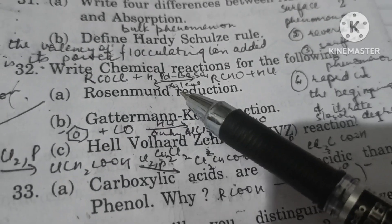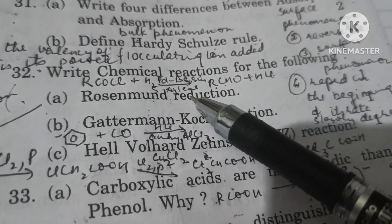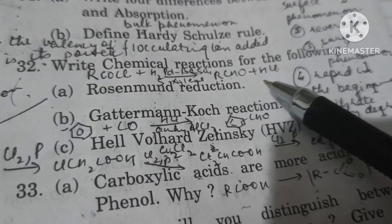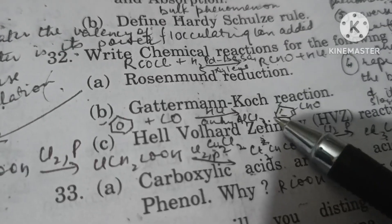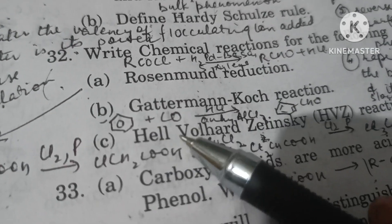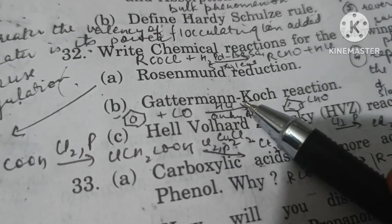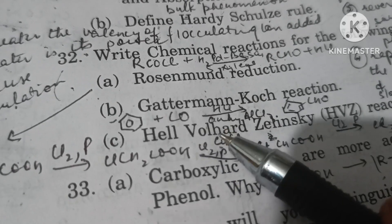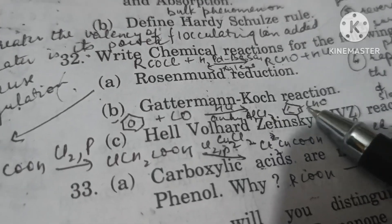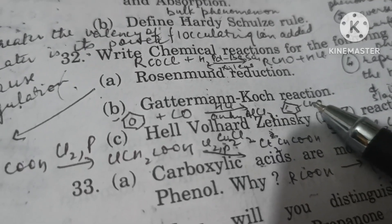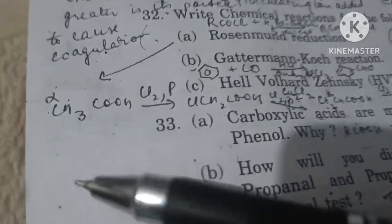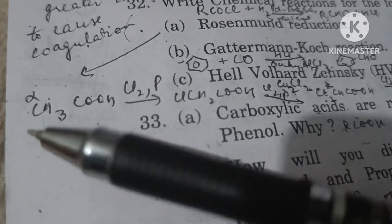Gattermann-Koch reaction: benzene is heated with carbon monoxide in the presence of HCl and anhydrous aluminium chloride to form benzaldehyde. Hell-Volhard-Zelinsky reaction: when an acid containing an alpha hydrogen is heated with chlorine in the presence of red phosphorus, the alpha hydrogen is replaced with halogen (chlorine or bromine).